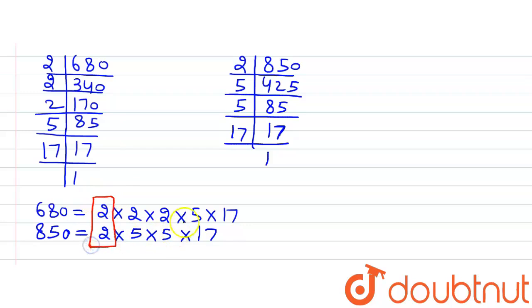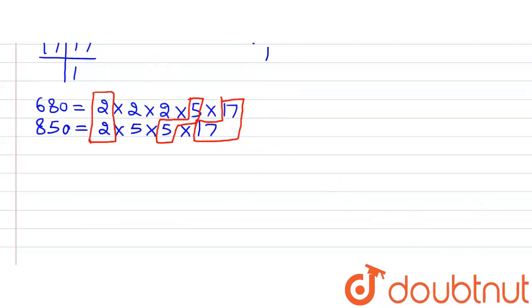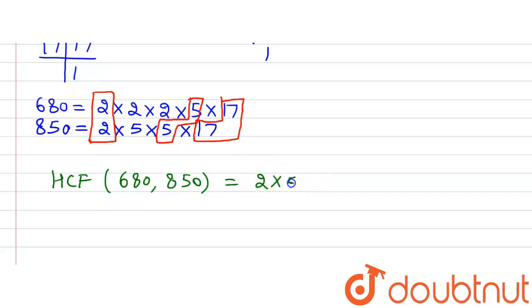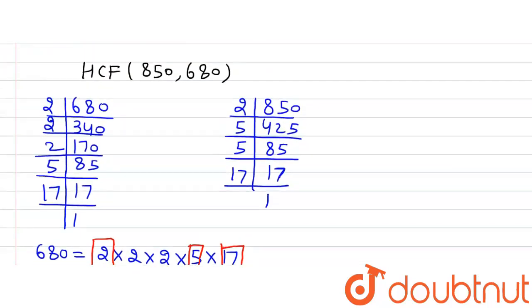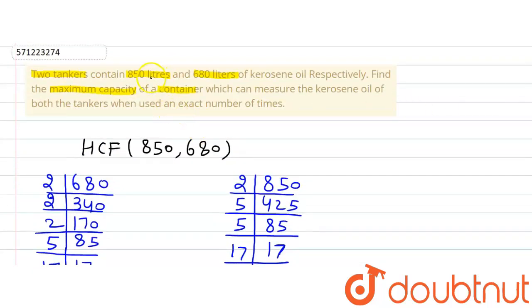The common factors in both 680 and 850 are 2, 5, and 17. So the HCF of 680 and 850 is equal to the product of all common factors: 2 × 5 × 17, which gives us 170. So 170 liters should be the maximum capacity of the container which can be used to measure the oil in both the containers.